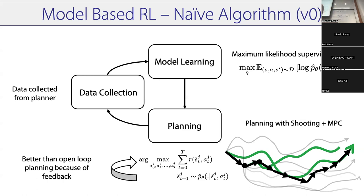A student asks about handling dynamic environments. Because you're doing re-planning and you can model stochasticity in your learned model, if something randomly changes you can account for it by doing on-the-fly re-planning. This is actually harder for a fixed policy. Model-based approaches are already a lot more reactive than a policy in this sense — though in principle a policy could also handle it since it's a feedback controller, it's harder to achieve in practice.